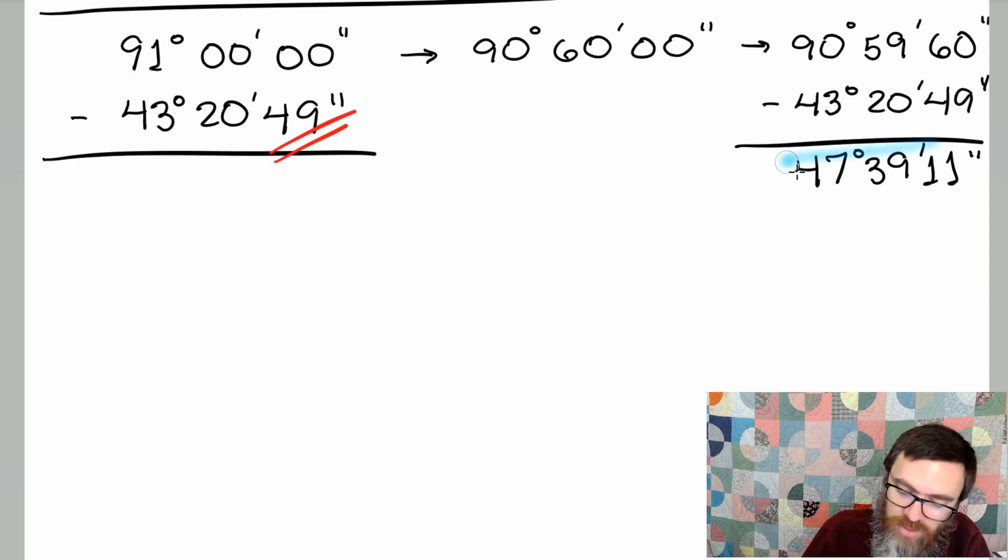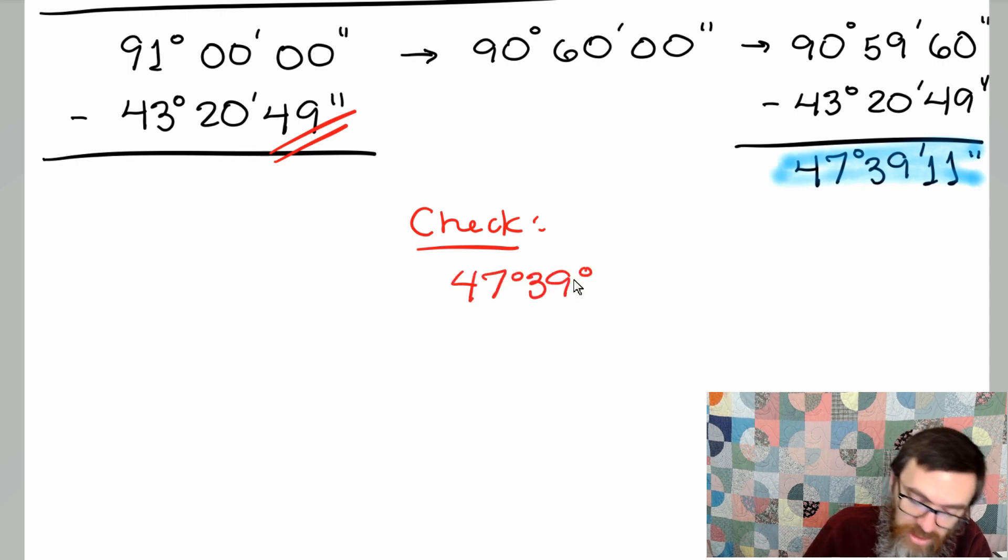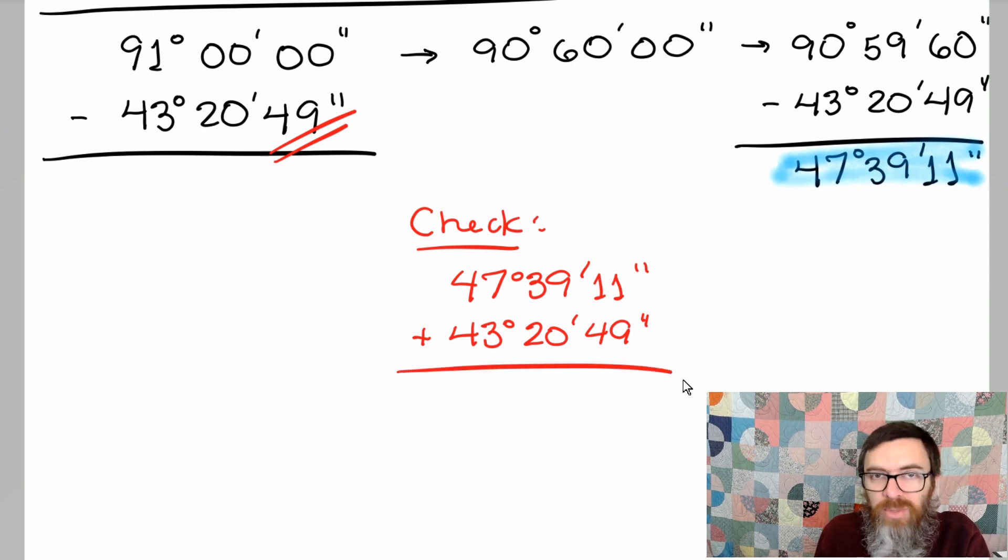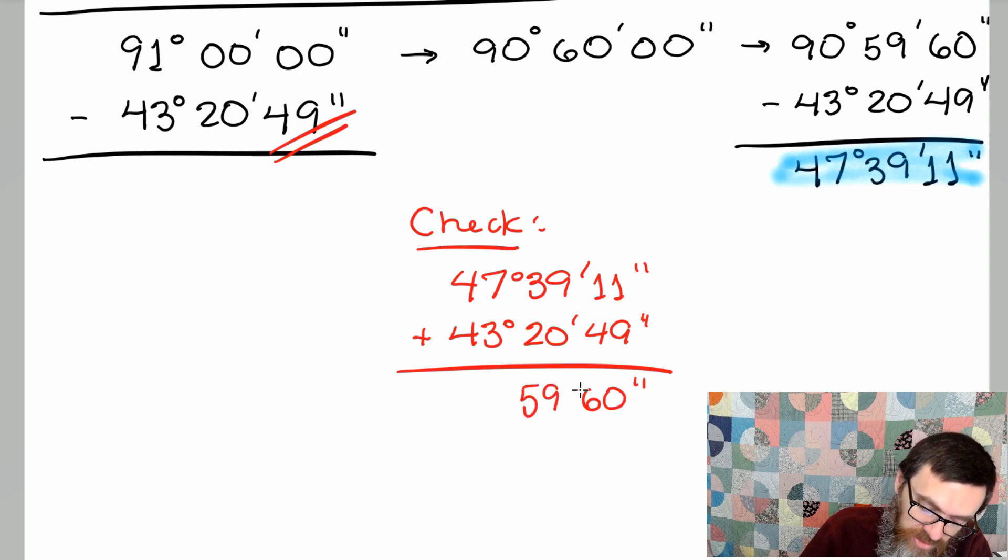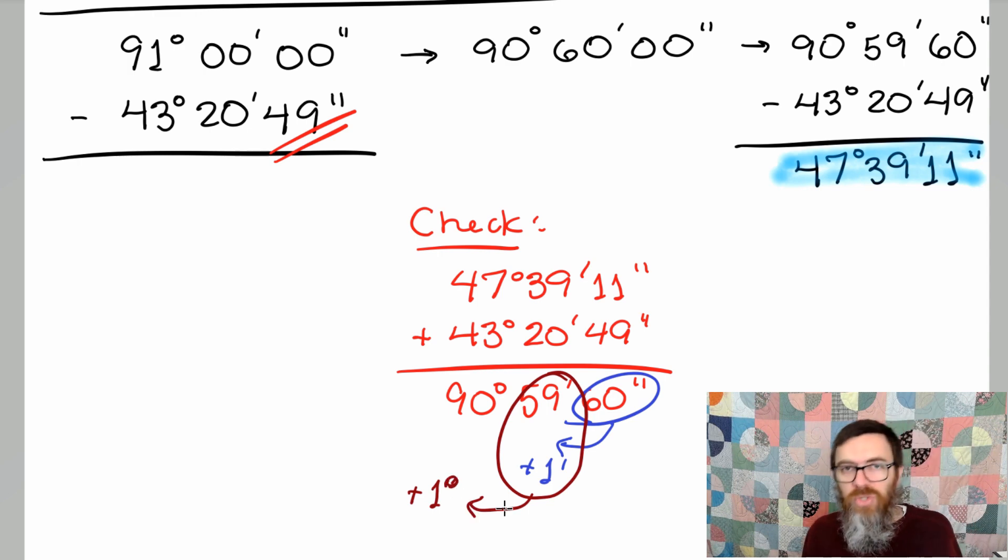Remember with these problems, just like you would have checked subtraction problems a long time ago, you can go back and you can add these. It shouldn't take much for you to check that if I take 47 degrees, 39 minutes, 11 seconds, and I add back 43 degrees, 20 minutes, and 49 seconds, I should come back up to the 91 degrees. You would have here 60 seconds, 59 minutes, and 90 degrees. But we know that this is going to give us a plus one to the minute, and then we're going to have 60 seconds, which is going to give us a plus one degree once I make that change. So you see we do get back to the 91 degrees.